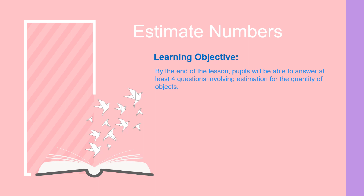Before I start the lesson, let's look at our learning objective. By the end of the lesson, Pupers will be able to answer at least 4 questions involving estimation for the quantity of objects. Maksudnya, objective hari ini, kamu kena menjawab dengan betul sekurang-kurangnya 4 soalan yang berkaitan dengan estimation. Estimation ialah jangkaan.